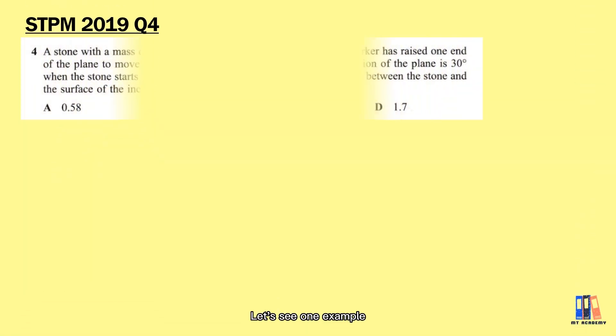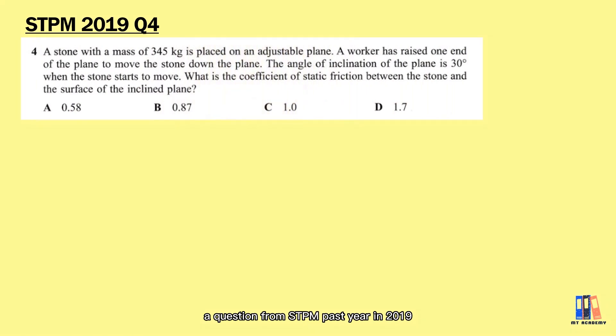Let's see one example, a question from SPM past year 2019. We have a stone with a mass of 345 kg that is placed on an adjustable plane. A worker raised one end of the plane to move the stone down the plane. It is found that the angle of inclination is 30 degrees when the stone starts to move.